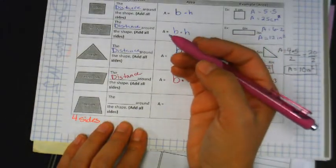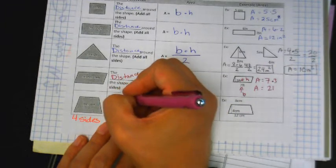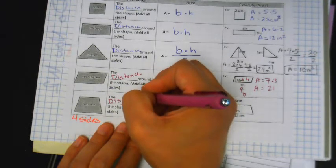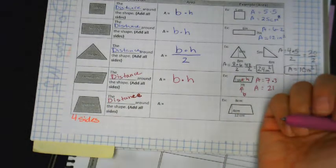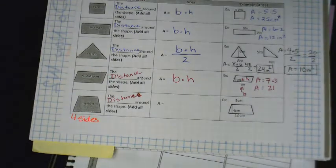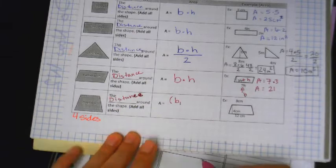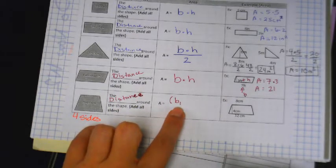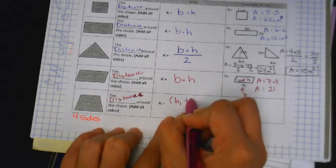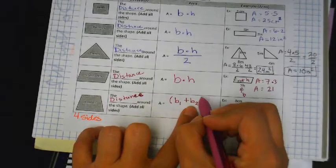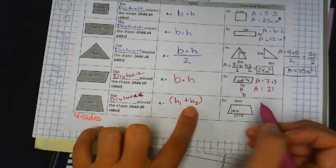So for the perimeter — the distance around the shape — we're going to write down the formula. It's going to look hard, complicated, like 'oh my gosh, I can't do this.' But you will do this. We're going to start with parentheses, then base one plus base two — it's the opposite of an exponent. Close the parentheses, then multiply by your height.